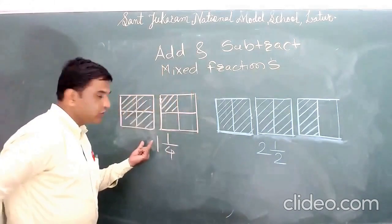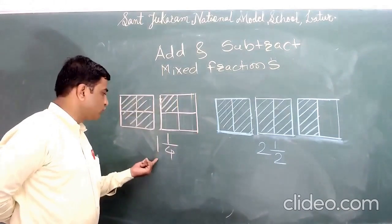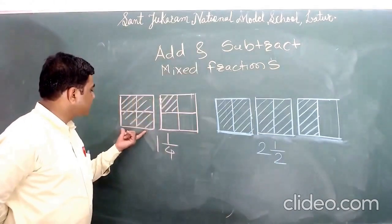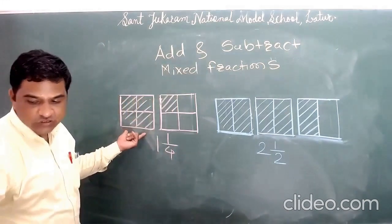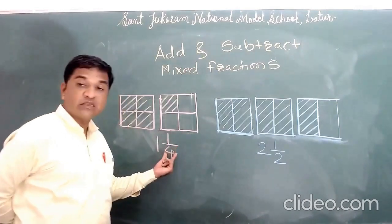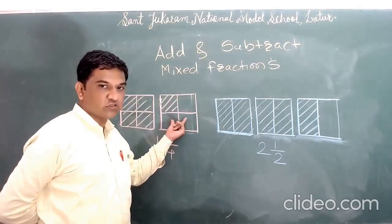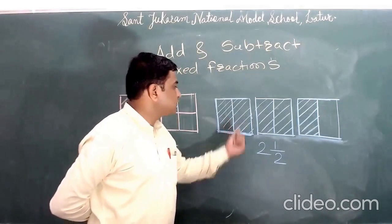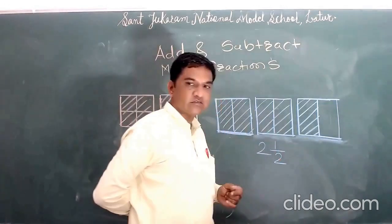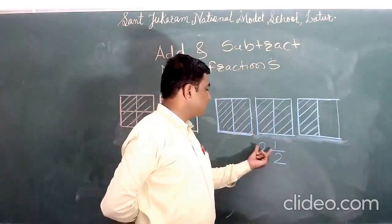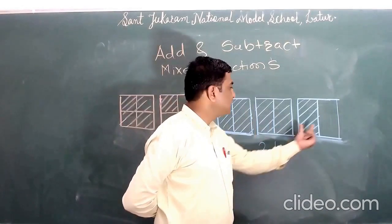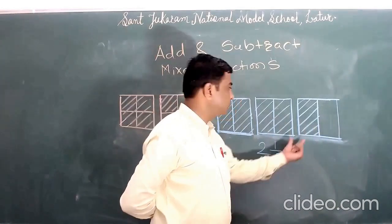For example, in front of you you can see two fractions: one whole one-by-four and two whole one-by-two. In the first fraction there is one whole square shaded with the pink color and a remaining part of the next square is shaded. In the second fraction, two whole one-by-two indicates that there are three squares, out of which two squares are fully shaded with the blue color and the third one is half shaded with the blue color.